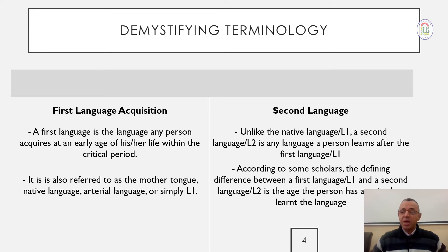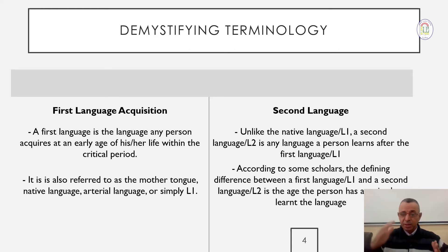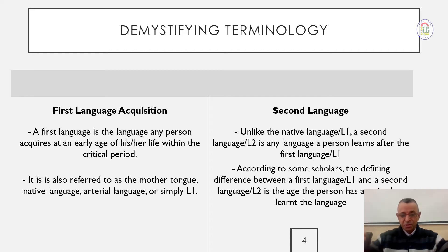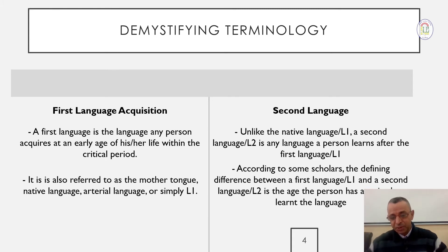Both languages are acquired — I focus on the term 'acquired.' After the critical age, all what we obtain as language — and here we use the term learning — it is L2, second language. An L2 could be a language that we learn at school, such as English or Spanish. Some students learn Spanish at the secondary school level, and all schools teach English in middle school and secondary school. So English or Spanish language in this context is an L2.